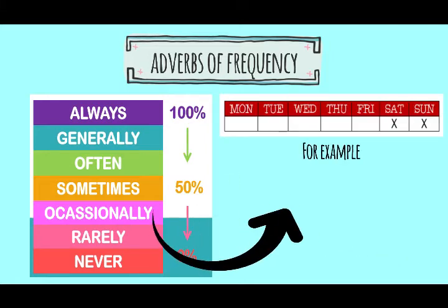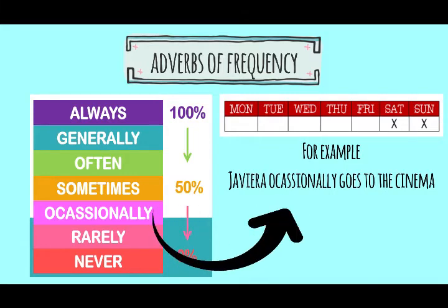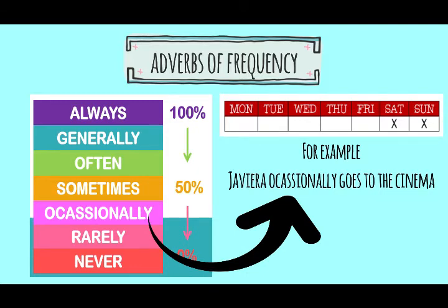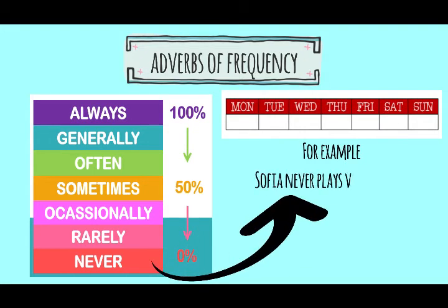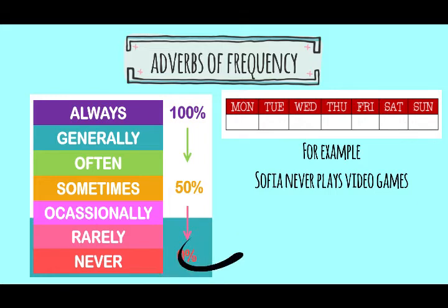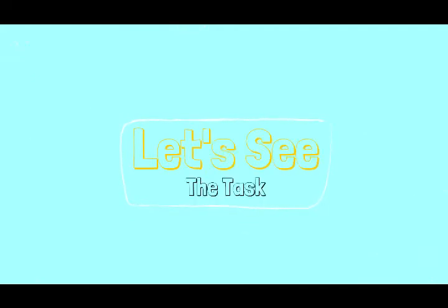Then we have 'occasionally' — something we do twice a week. For example: 'Javiera occasionally goes to the cinema' — Javiera ocasionalmente va al cine. Then 'rarely' — rarely — something we do about once a week. For example: 'Gustavo rarely misses a football match' — Gustavo raramente se pierde un partido de fútbol. And then 'never' — something we never do. For example: 'Sofia never plays video games' — Sofía nunca juega videojuegos.